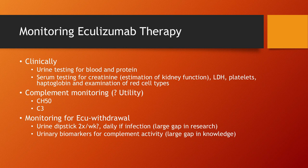Monitoring eculizumab therapy — some people look at the urine every month for blood and protein. Some will have kidney function tested, LDH, platelets, haptoglobin. Some look at red cells to see if they're chipped. Some get complement monitoring, though I'm not sure about the utility. And then there's monitoring off ECU, which is a different question. In this room, how many have questioned whether they should come off ECU?